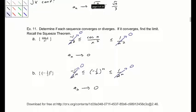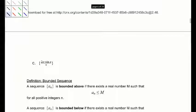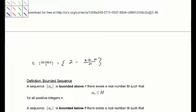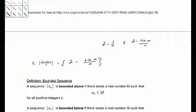One more: sine is bounded, so we rewrite as 2 minus (sine n)/n. Since sine n is bounded between negative 1 and 1, sine n over n is bounded between negative 1/n and 1/n, meaning the full expression is between 2 minus 1/n and 2 plus 1/n. As both bounds go to 2, our sequence a sub n converges to 2.